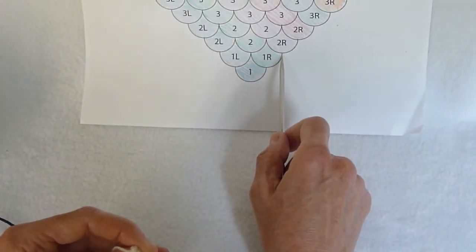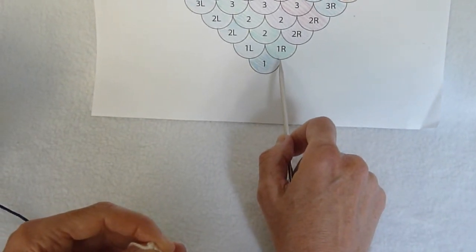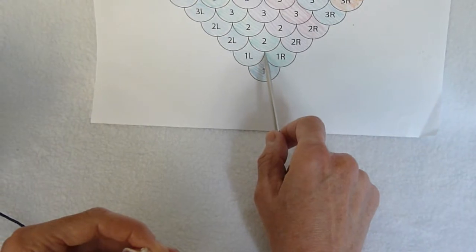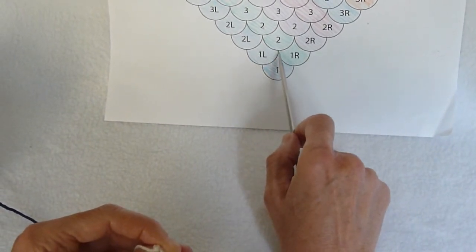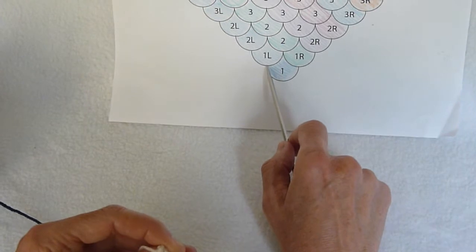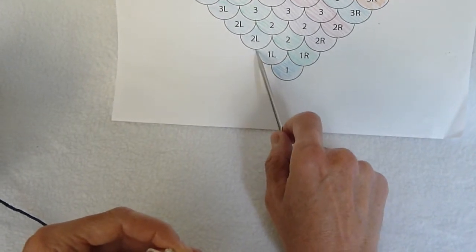So cast on 24 stitches here, pick up and knit 23. When we go to do the left-hand side, we first pick up 23, and then we cast on 24.